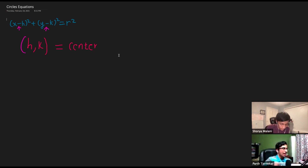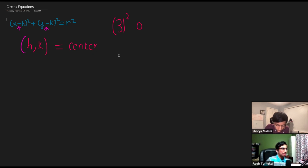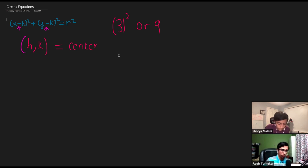You might notice how the negative h and negative k are written in the equation — that's because it's an inverse. If you have a positive h value, it's written as a negative h in the equation, and if you have a negative h, it's written as positive. We'll explain why below. Also for r squared, you could write it as three squared or as nine — both are mathematically correct. Personally I prefer keeping it in squared format for uniformity.